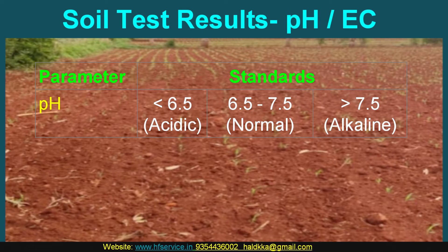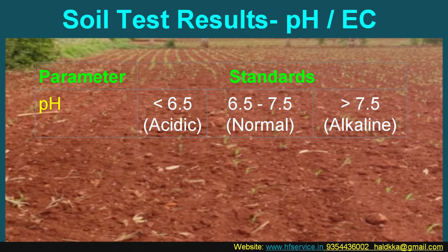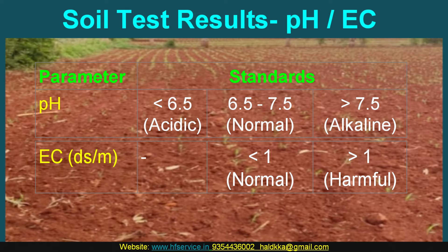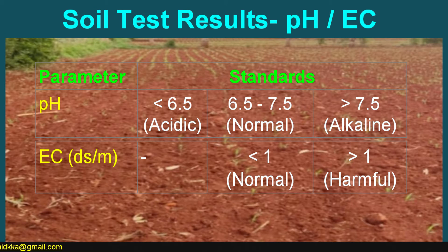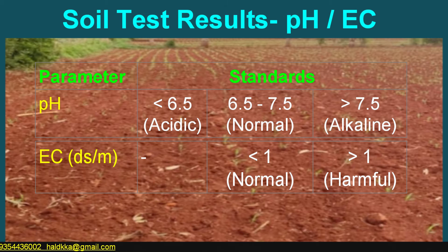pH values below normal are acidic, and with declining pH value the extent of acidity increases. pH above 7.5 indicates salinity and it increases with the increase in pH. Similarly, EC — that is electrical conductivity — below 1 is normal, whereas higher values are harmful. EC of soil indicates the amount of salt present in the soil. Soils contain some salts which are essential for plant growth, while additional salt comes from the fertilizer we apply, from irrigation water, and from dissolving soil minerals, and this is harmful, and in this case the EC is above 1.